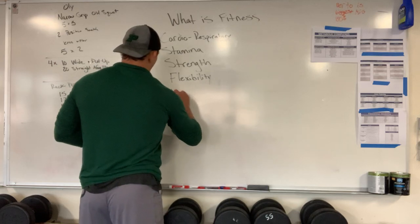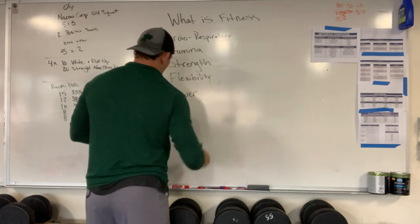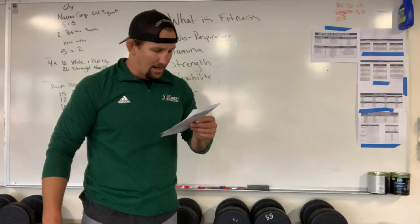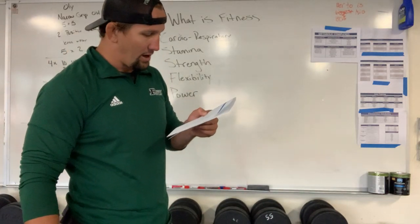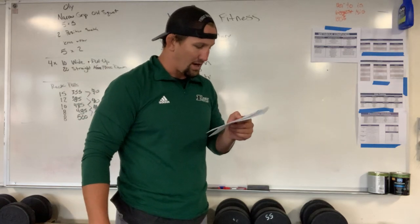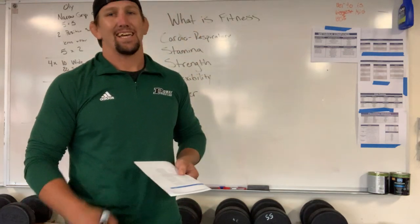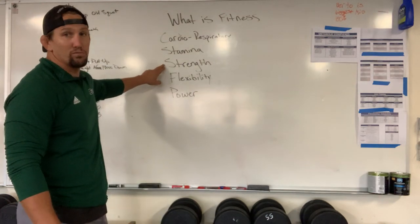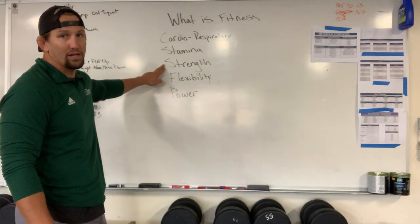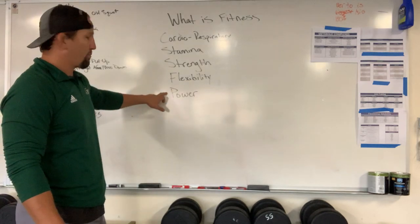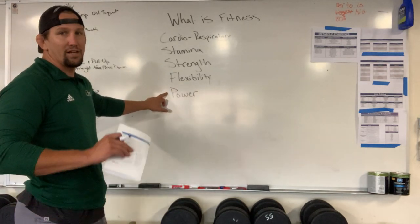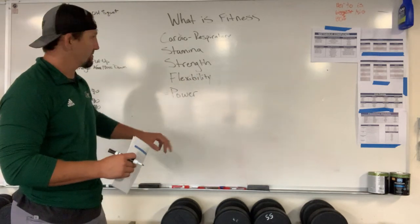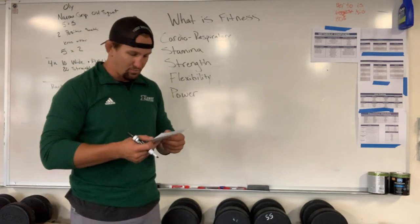Number five: power. Please know that power is the ability of a muscular unit or combination of muscular units to apply maximum force in the minimum amount of time. Strength and power are different: with strength you might move a really heavy weight but not go very fast. Power requires moving in a certain amount of time — the most force in the least amount of time. Strength doesn't really care about time.